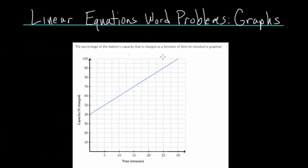So let's just jump right into this problem here. The percentage of the battery's capacity that is charged as a function of time, which is in minutes, is graphed. So it looks like on our horizontal axis, which we usually call the x-axis, but maybe in this case it's the t-axis for time, this horizontal axis tracks our minutes. So here's 5 minutes, 10, 15, and so on.